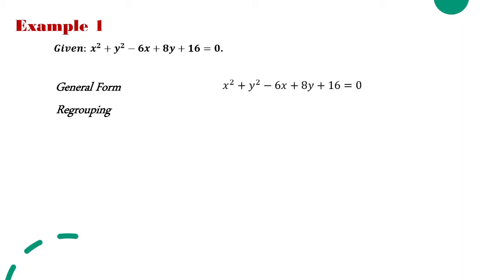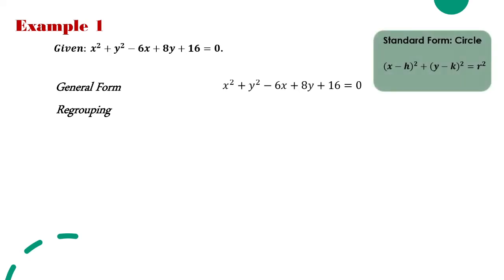The first step to find the standard form of the equation of this conic section is to do regrouping — we're going to lump together the terms having the same variable. Remember that we follow the standard form of the equation of a circle, where the x and y variables are on the left side and the constant is on the right side. So we have (x² - 6x) + (y² + 8y) = -16.